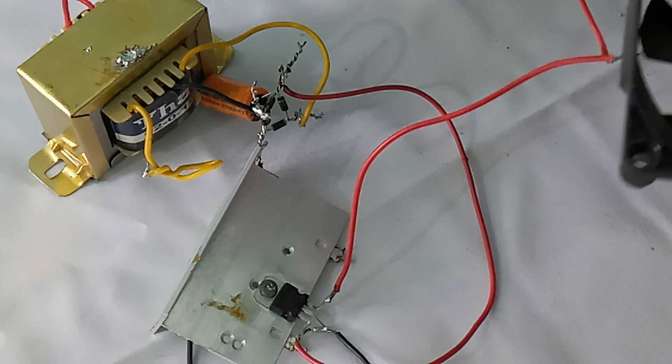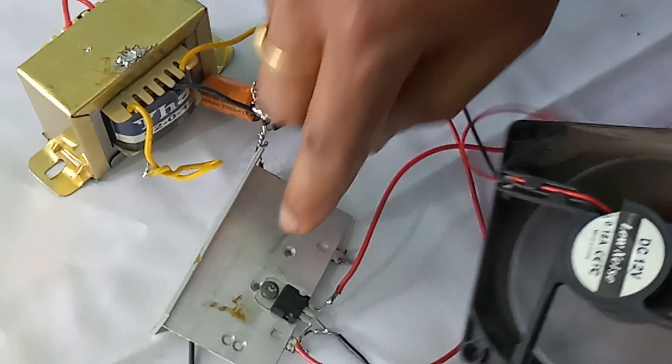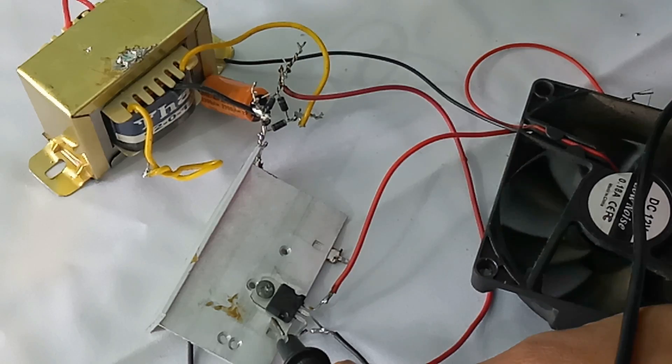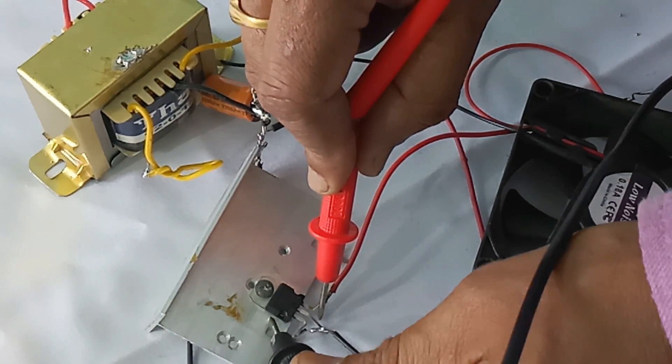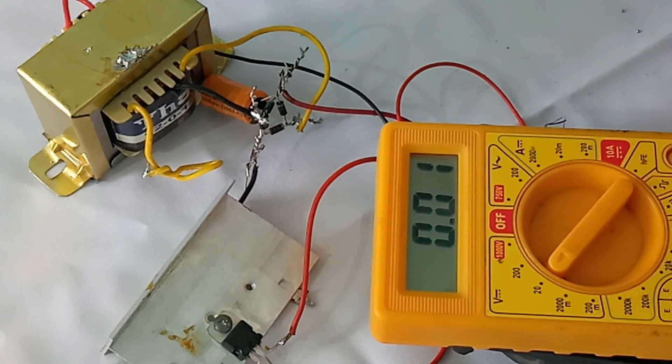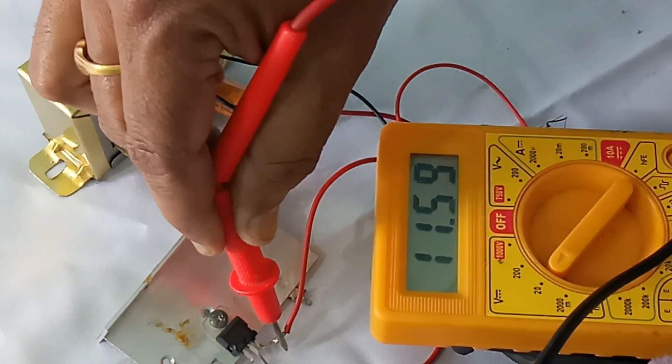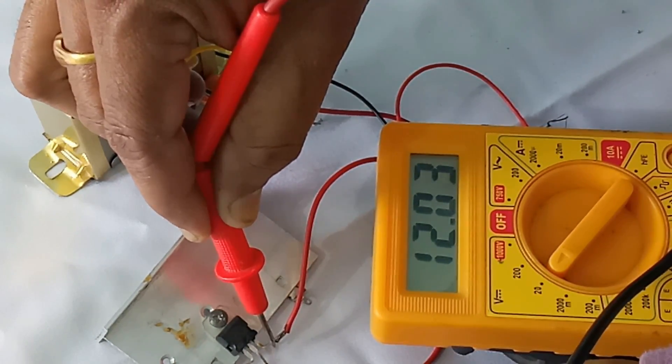Now I will give this one supply, it is working. Now I will measure this output. I'll show you this measuring, this is the ground, this pin is output. 12 volts accurate, 12 volts is coming, you observe this constantly.